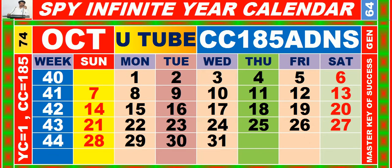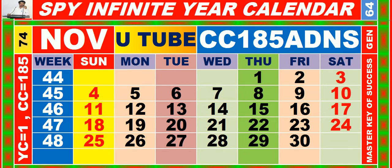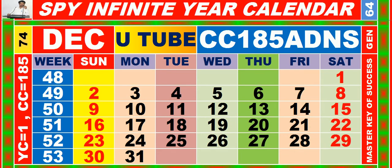Calendar for the month of October having calendar code equal to 185. Calendar for the month of November having calendar code equal to 185. Calendar for the month of December having calendar code equal to 185.